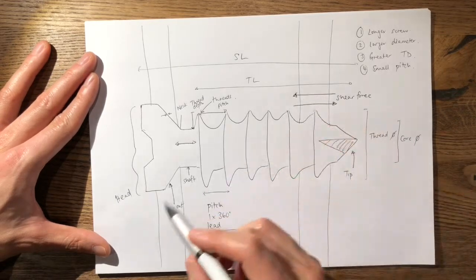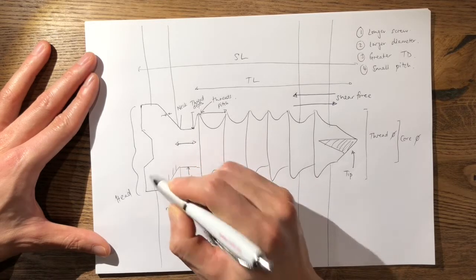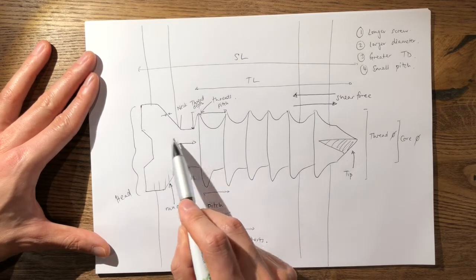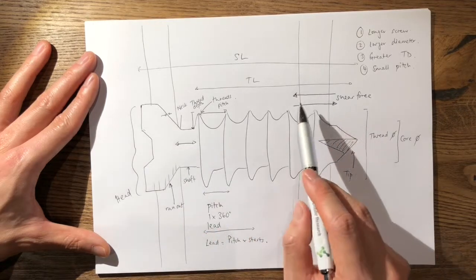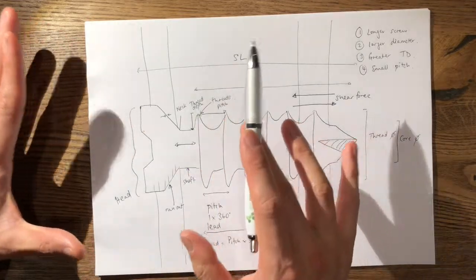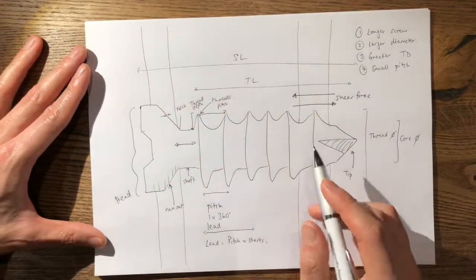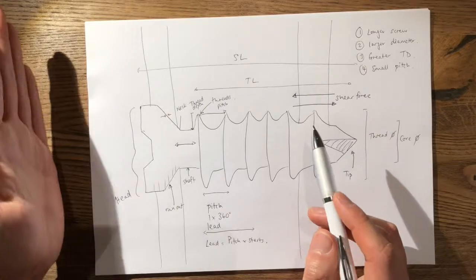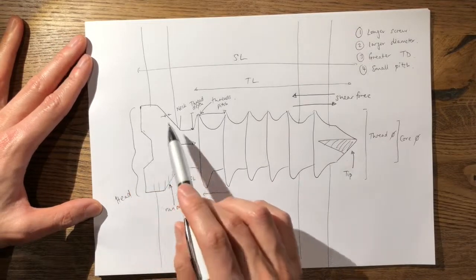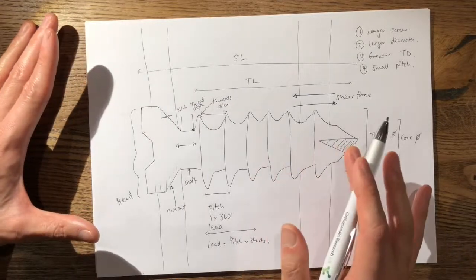A locking screw has threads in the run-out and head which lock into the plate. Therefore you do not get tensile forces in the screw and you do not get shear forces at the cortex. It purely locks into the plate, making an angular stable and completely rigid construct. The plate does not compress onto the bone and there is no friction — it simply sits neutrally with no compression across it.